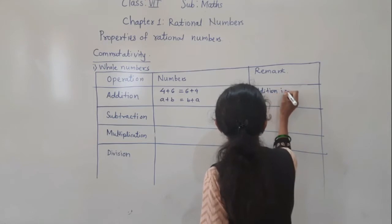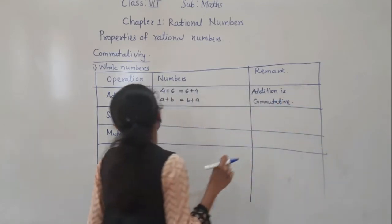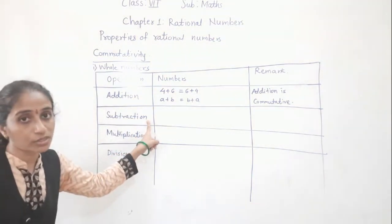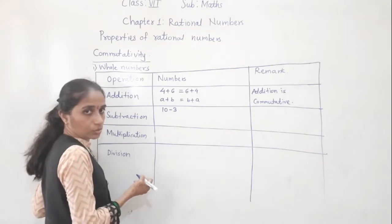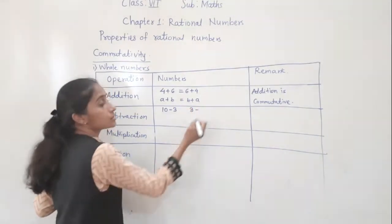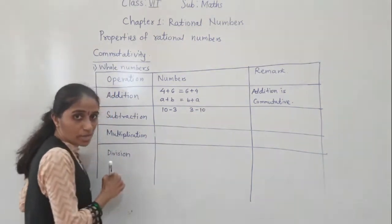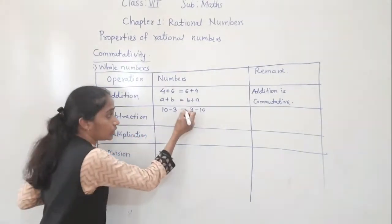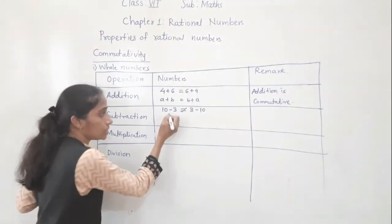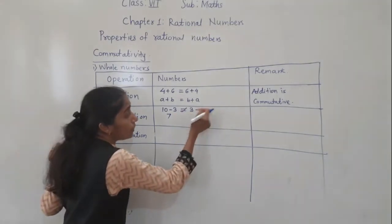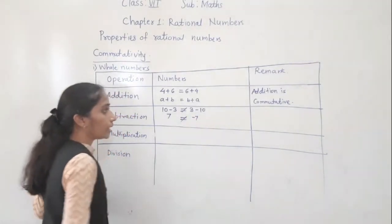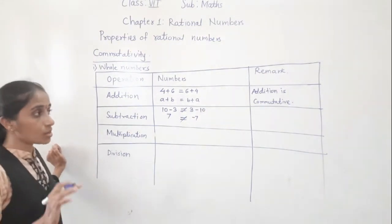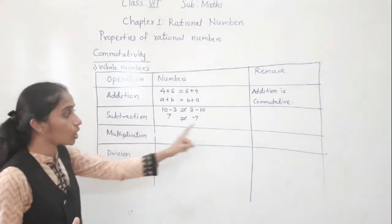Now we will see for subtraction. Suppose 10 minus 3 and 3 minus 10. Will we get the same answer? No. See: 10 minus 3 gives 7, but 3 minus 10 gives minus 7. They are not equal. So subtraction is not commutative. This property does not work for subtraction.